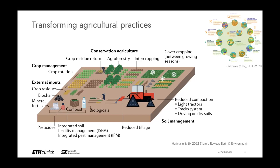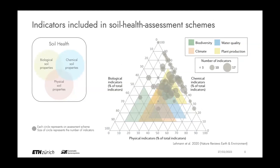When we look at indicators that define soil health, we usually characterize soils with biological, chemical, and physical soil properties. However, looking at current soil health assessment schemes — as reviewed by Lehman et al. — biological indicators have been considerably neglected. If we are thinking about addressing biodiversity loss and climate regulation, we clearly need to improve the inclusion of biological indicators into soil health assessment schemes, and this is a primary goal of our group.